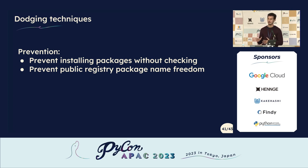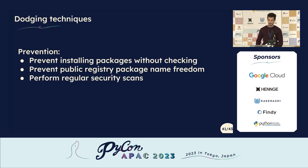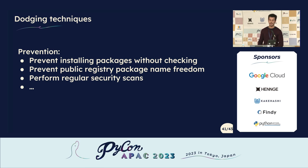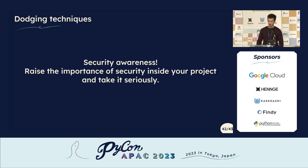You should check whether public package registries contain the internal package names your project uses — and those names should not be left free. You can upload a dummy package containing just 'print hello world' so the name is claimed. Perform regular security scans through penetration tests or vulnerability assessments so security engineers find issues and report them. Always be aware when it comes to security — a very small typo or leaving your package name unclaimed somewhere could lead to a disaster, as seen in big companies. Always remind your developers to develop in a more secure way.